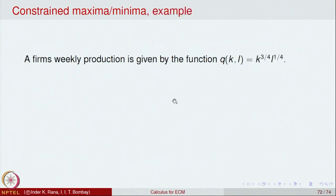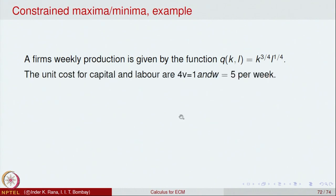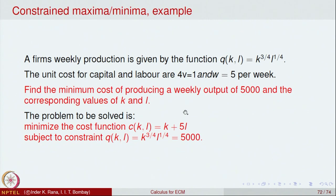Here is an example. A firm's weekly production is given by Q(K, L) = K^(3/4) · L^(1/4). The unit cost of capital is v = 1 and of labour is w = 5 per week. Find the minimum cost of producing a weekly output of 5000 units and the corresponding values of K and L.